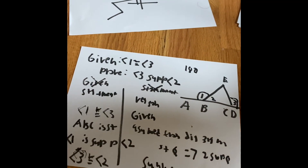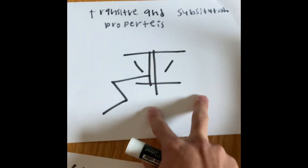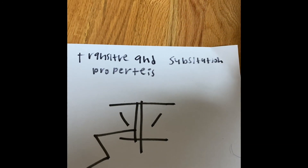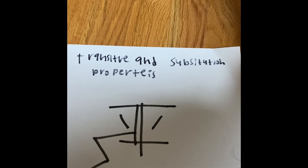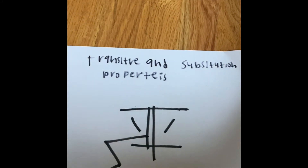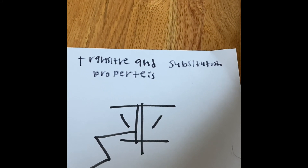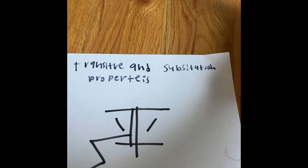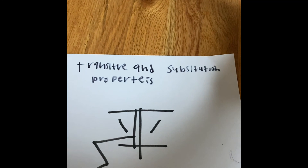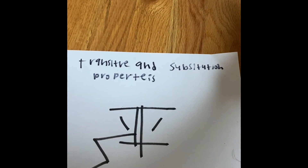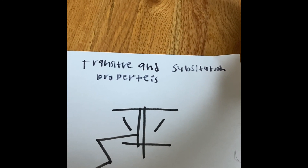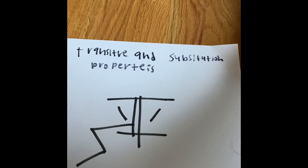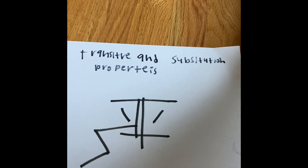That is how we use the transitive and substitution properties. If you ever get confused: the transitive property applies only when things are congruent, like angles and segments. The substitution property applies when things are not directly congruent, but you have to find figures that are congruent. Thanks for watching — have a nice day.